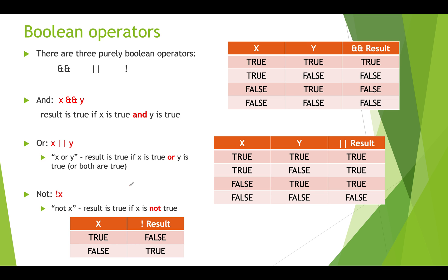Next we have the negation operator, which is an exclamation mark. So NOT x: when we put the negation operator in, if x is true the result is false, and if x is false the result is true.